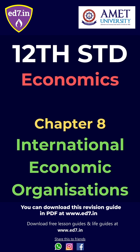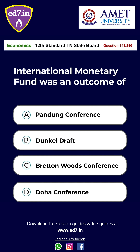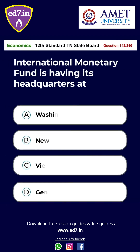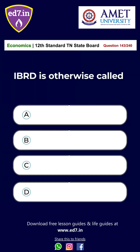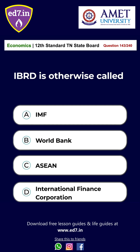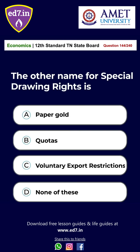Chapter 8: International Economic Organizations. Question 141: International Monetary Fund was an outcome of — A. Bandung Conference, B. Dunkel Draft, C. Bretton Woods Conference, D. Doha Conference. The answer is Option C: Bretton Woods Conference. Question 142: International Monetary Fund has its headquarters at — A. Washington DC, B. New York, C. Vienna, D. Geneva. The answer is Option A: Washington DC. Question 143: IBRD is otherwise called — A. IMF, B. World Bank, C. ASEAN, D. International Finance Corporation. The answer is Option B: World Bank. Question 144: The other name for special drawing rights is — A. Paper Gold, B. Quotas, C. Voluntary Export Restrictions, D. None of these. The answer is Option A: Paper Gold.